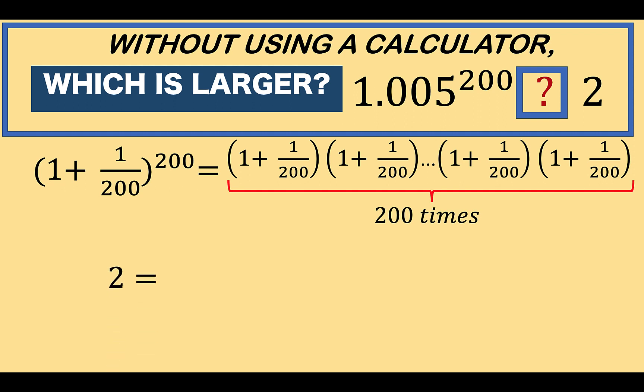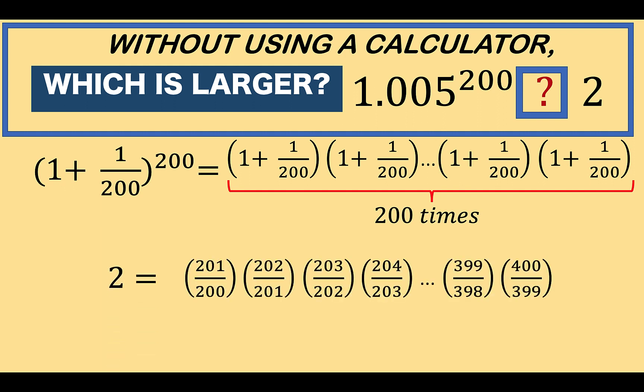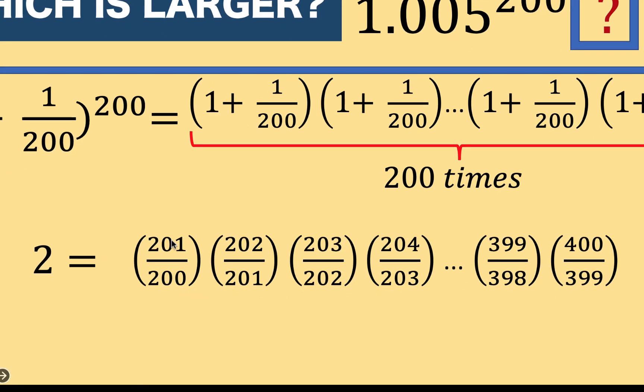Now let's go to the number 2. This number 2 can also be written in fractions like this. Notice 201 over 200 times 202 over 201 times 203 over 202 all the way up to 400 over 399. And there are 200 factors here all in all. Notice that we start with 201 in the numerator followed by 202 followed by 203 all the way to 400. So that means there are 200 factors all in all.